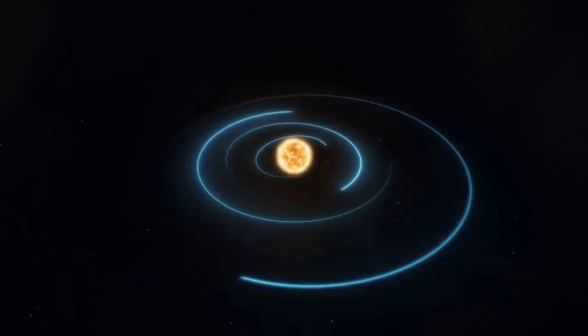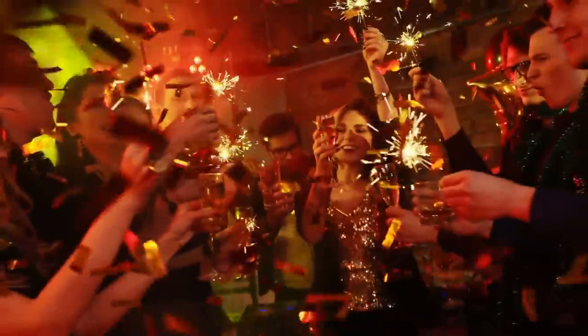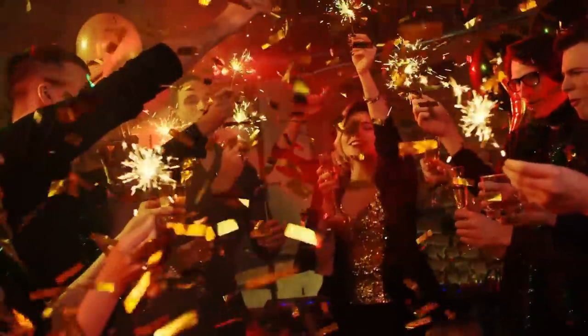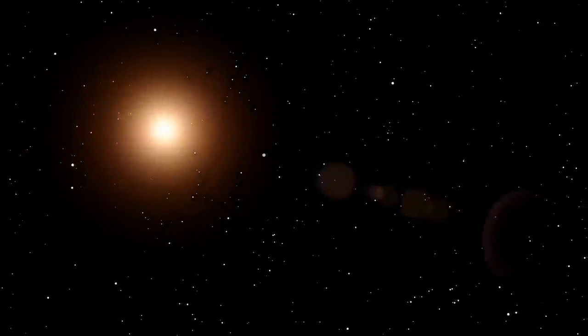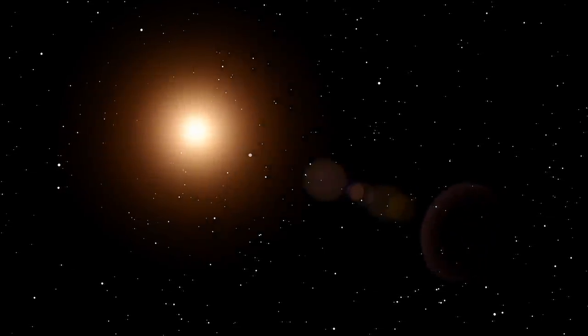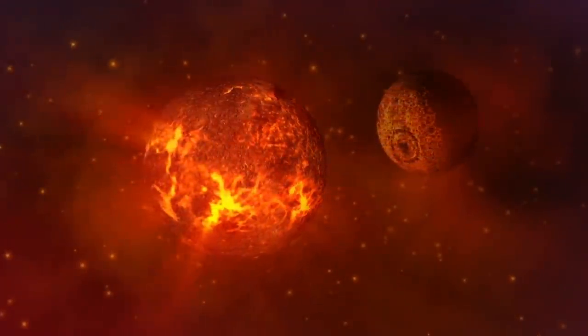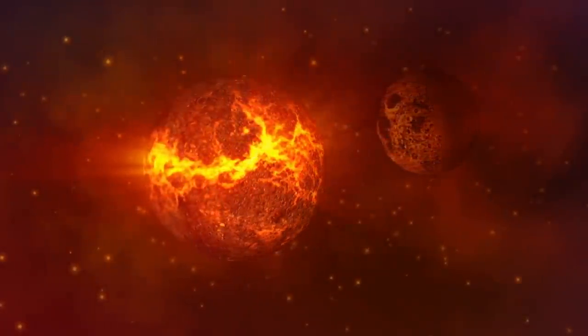Unlike earth, Proxima Centauri b takes only 11.2 days to orbit its star. Imagine having such a small year, people would get bored of new year parties real soon. Interestingly, Proxima Centauri b receives an even amount of solar energy from its star Proxima Centauri as much as earth receives from the sun. But due to the close proximity of the planet to the star, things can be very different on Proxima Centauri b than what we are hoping for.